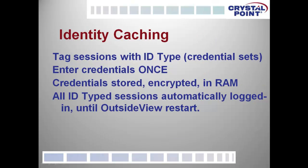Prior to release, OutsideView 8.1 was tested extensively by a number of customers, and I think this was probably the most popular new feature. Identity caching is the concept that you can take session files and tag them with a common ID type, meaning those session files all share a common credential set. So if you have different logons to different hosts or different roles, each of those can be one ID type.